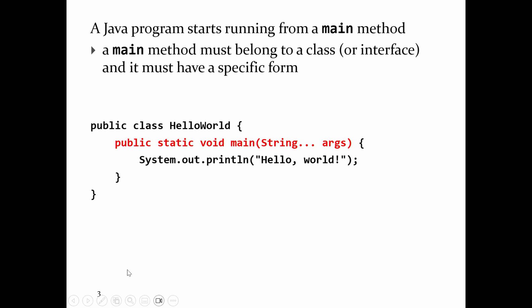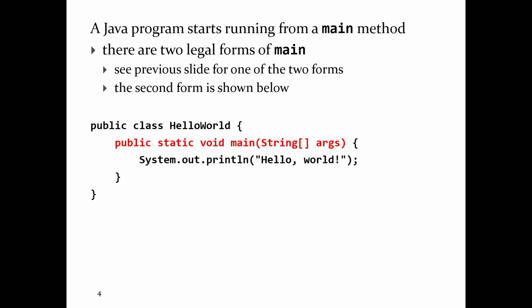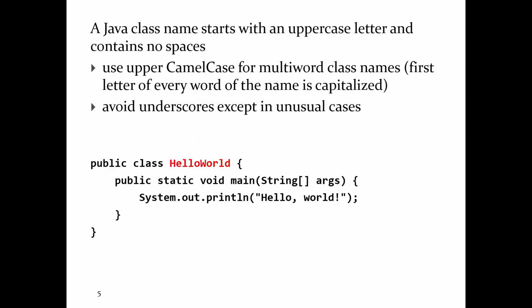You need a main method to have a running Java program — that's the first big difference. There also has to be something called a class, because you can't have a method that lives on its own. In other words, I can't just make the main method. All methods in Java live inside things called classes or interfaces. So I also have to make the class.